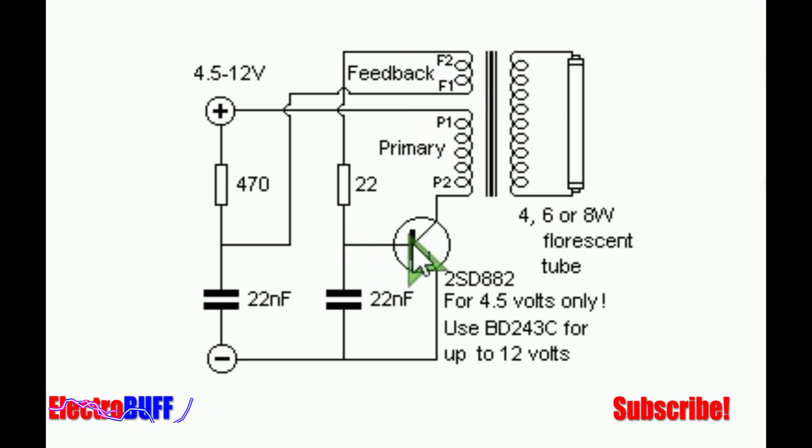So this will cause the transistor to turn off very fast, and all the energy stored in the core will be transferred to the secondary side. Then the process will repeat over and over again, many hundreds or even thousands of times per second.